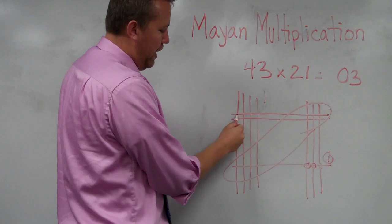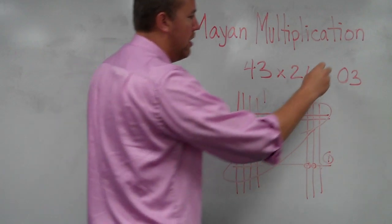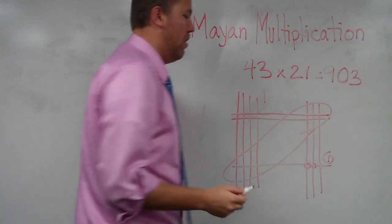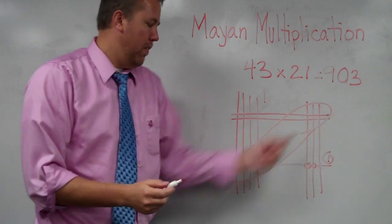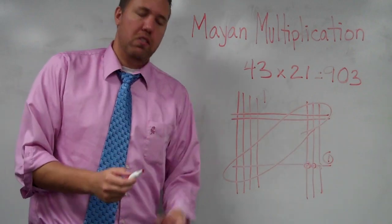1, 2, 3, 4, 5, 6, 7, 8, 9. So we have the ones, the tens, and the hundreds.